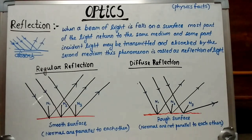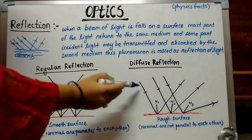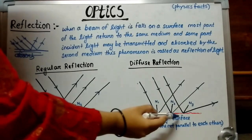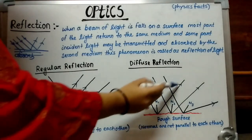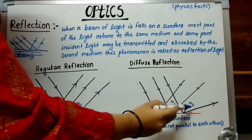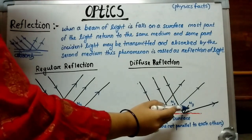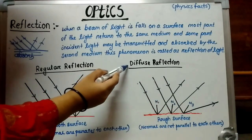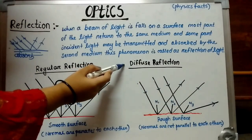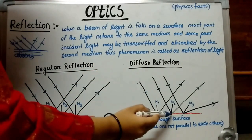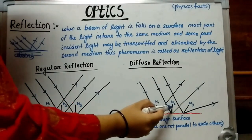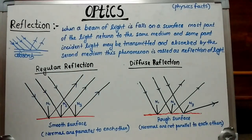Now we go to diffuse reflection. If we take a parallel beam of incident light and it hits a rough surface, after reflection the reflected rays are not parallel to each other — they diverge in different directions. If we draw normals at the points of incidence, those normals are also not parallel to each other. This type of reflection is called diffuse reflection.